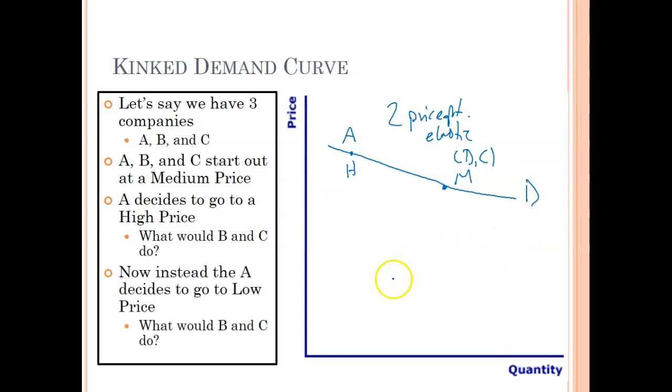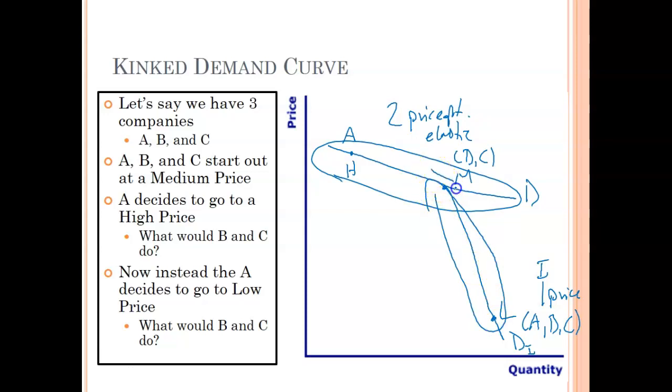Now, what if instead A says, you know what? This time I'm going to price at a low price. Well, if B and C stay up at the medium price like they did before, they're not going to lose business because, again, law of demand says at the lower price, consumers are rational. So what's going to happen is if A goes low away from this medium price, well, the other two are going to follow. So now there's only one price. And because there's only one price, there's only a standardized product. So it's going to be more inelastic. So I'll go and kind of draw a demand curve a little bit more. Straight up and down.